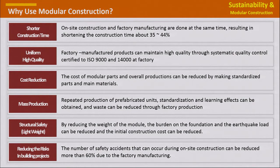The advantages of the modular construction method are: first, shorter construction time; second, uniform high quality through factory manufacturing; third, cost reduction through mass production; fourth, improved structural safety due to weight reduction; and lastly, it is possible to reduce safety accidents by reducing on-site work such as work at height.